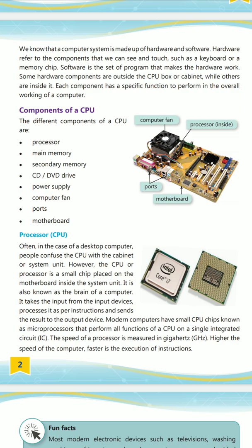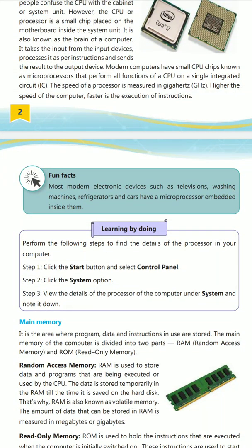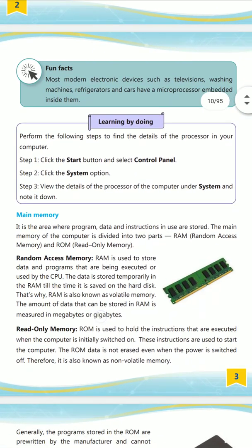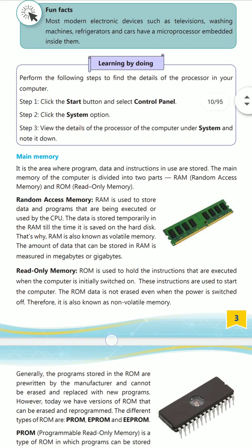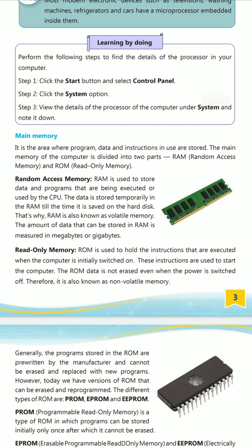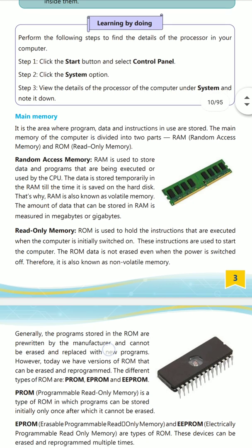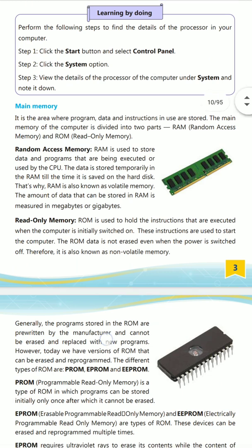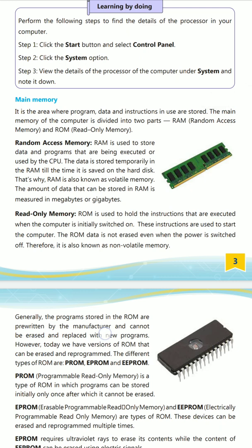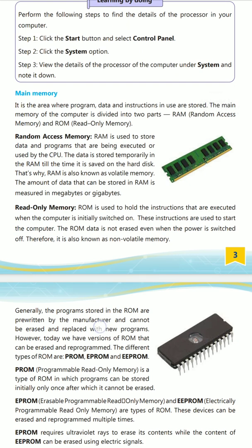Now here is main memory — it is the area where programs and data instructions are stored. The main memory of a computer is divided into two parts: RAM (Random Access Memory) and ROM (Read Only Memory). RAM is used to store data and programs that are being executed or used by the CPU. The data is stored temporarily in RAM until it is saved on the hard disk drive. That is why RAM is also known as volatile memory, and the amount of data RAM can store is measured in megabytes and gigabytes.